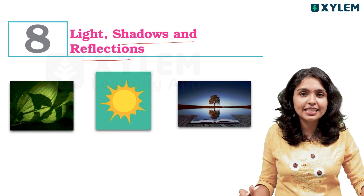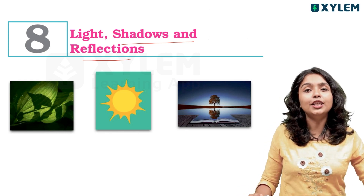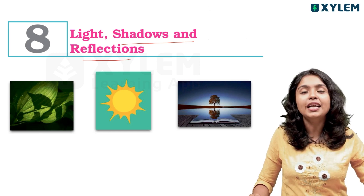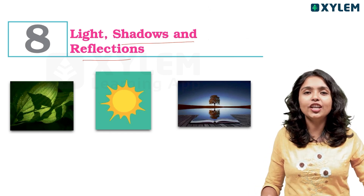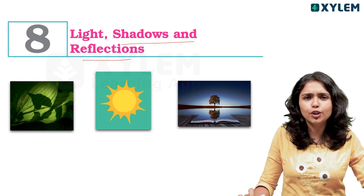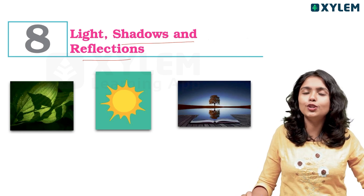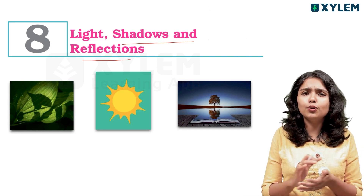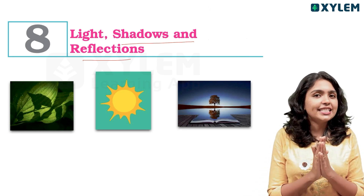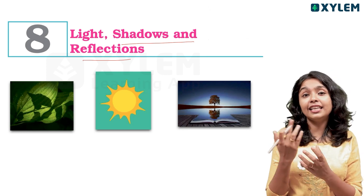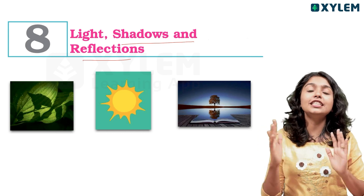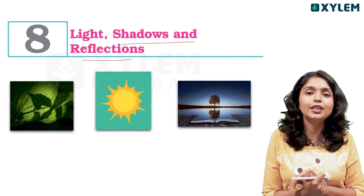We are going to take a look at some differences. What is a luminous object? The main example is the sun. We are going to understand that luminous objects emit light.